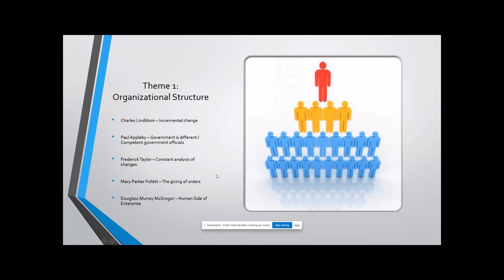And then Mary Parker Follett's the giving of orders. This is important because with this change, you don't want it to seem like it's coming just straight from the chief of police. It's coming from the politicians, it's coming from the entire, the entirety of the department. With the giving of orders, it proposes that one person does not give the orders to another person, but both should agree to take their orders from the situation. If orders are simply part of the situation, the question of someone giving and receiving orders doesn't come up. Everyone accepts the orders that are dictated or given by the situation.